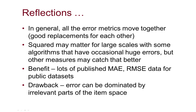All of these error metrics are highly correlated. Studies have already plotted the graphs: if an algorithm is much better than another by MAE, it's probably better by RMSE too. In general, if you pick one measure like this, it's going to be good for anything. Squared error could catch large errors that happen occasionally, but there are other measures we'll talk about in the next lecture that deal with that better.